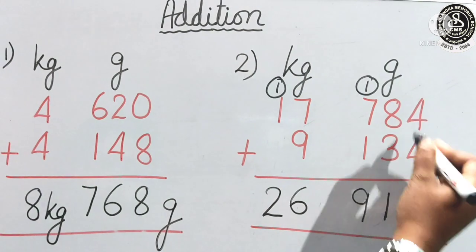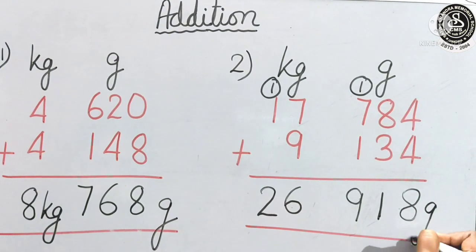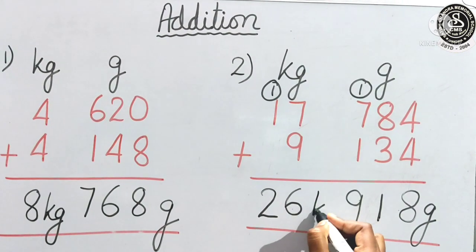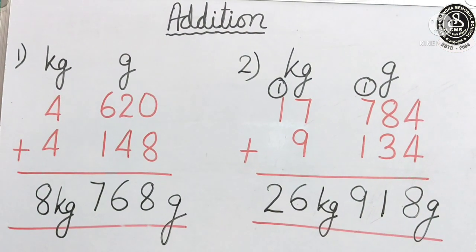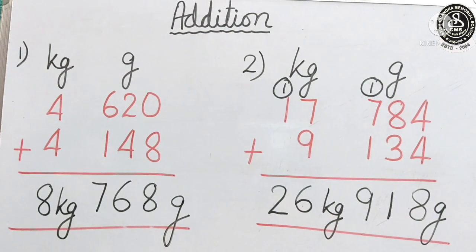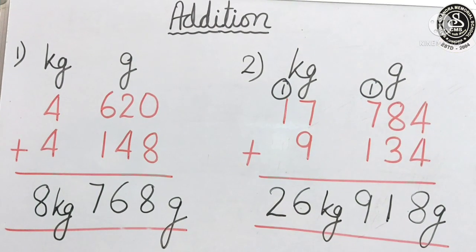We will write the unit. This one is in gram. So, we will write here gram. This one is in kilogram. We will write here kilogram. Now, children. Some more example I have. Let us do that one also.